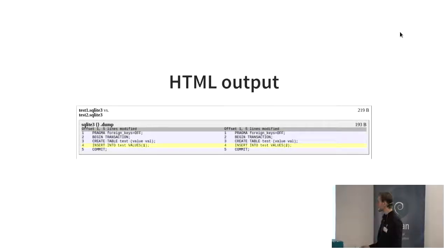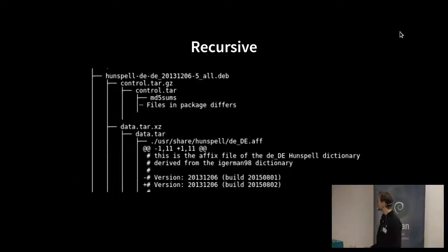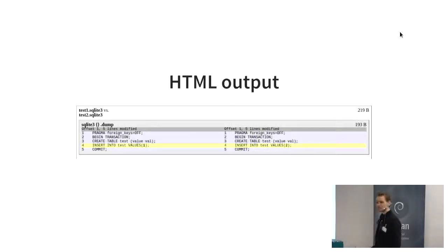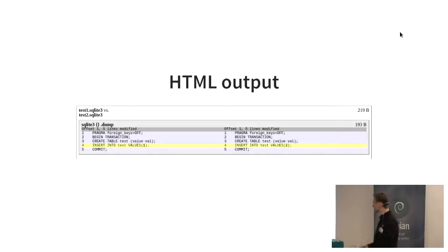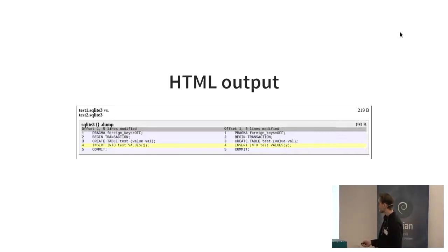Diffoscope supports a lot more things. We've been showing terminal text output, but it's got an HTML output mode, which is really useful when the hierarchy gets a bit more complicated. Instead of being layered on top of each other like a unified diff, you get the diff on the left and the right, with a nested thing inside with colours and lines, links to various things, bits of metadata, and what command it used.